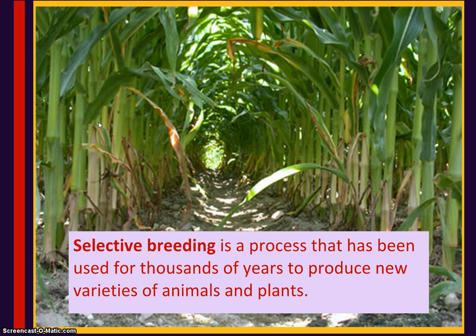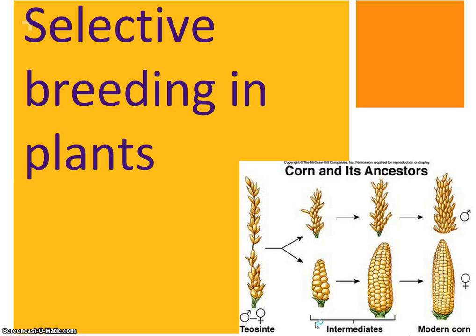Selective breeding, if you want a traditional definition, is a process that has been used for thousands of years to produce new varieties of animals and plants, and we're going to give you some examples of that.